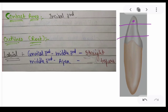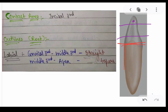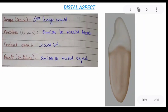Looking at the root outlines from the mesial aspect: on the labial outline, from the cervical third to the middle third it is straight, and from the middle third to the apex it tapers.